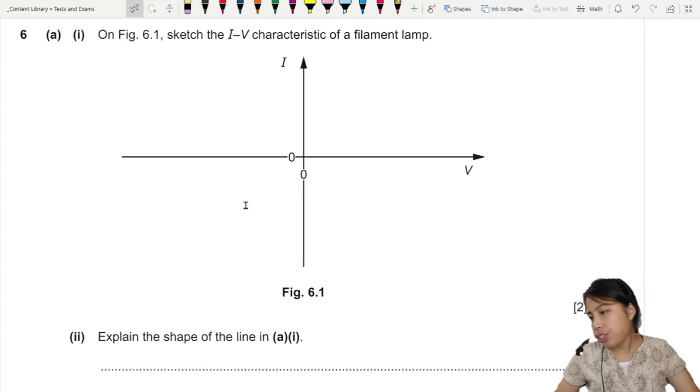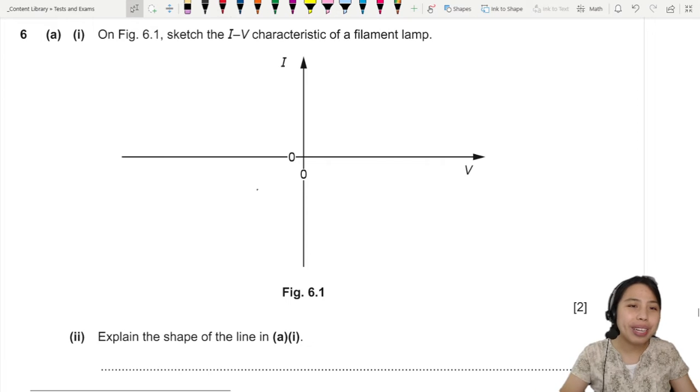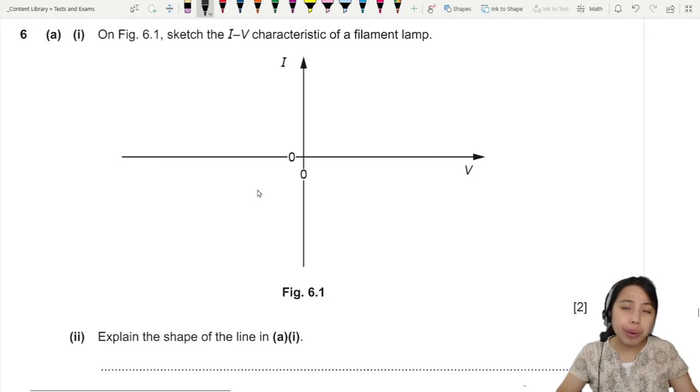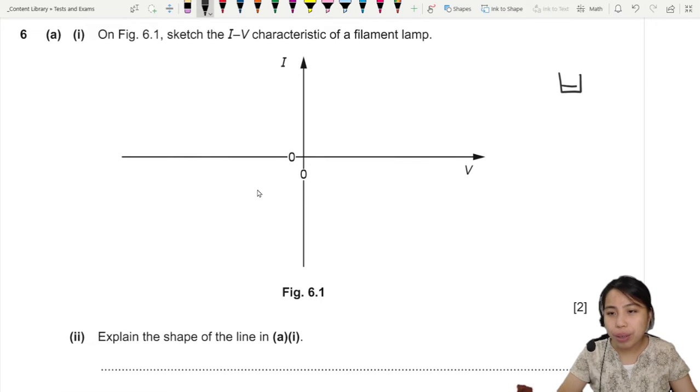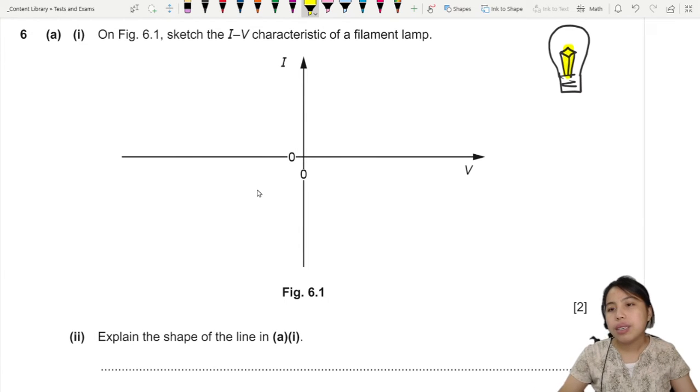On this figure sketch the I-V characteristic of a filament lamp. It's a filament lamp. It's what we call the light bulb. The one where you know got a screw here, got a glass here and then there's some kind of wire inside there and this wire is the thing that glows very bright that causes the whole bulb to kind of light up.